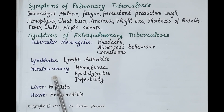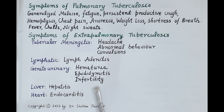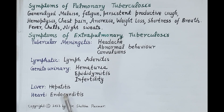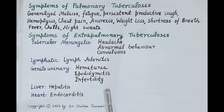TB infection in the genitourinary tract shows symptoms like hematuria — blood in the urine — inflammation of the epididymis, and infertility. Mycobacterium tuberculosis infection in the liver causes hepatitis. If the heart gets infected it can cause endocarditis — inflammation of the endocardium, the innermost lining of the heart wall. Infection can also spread to bones and skeletal muscles, causing for example TB of the spinal cord.